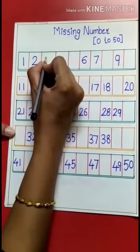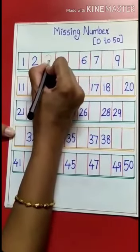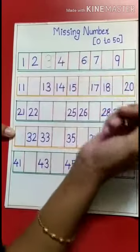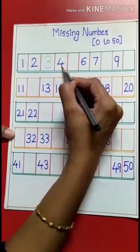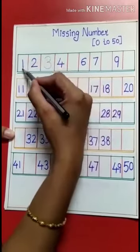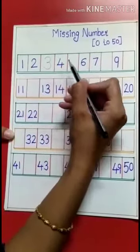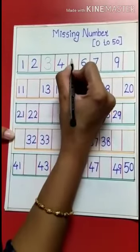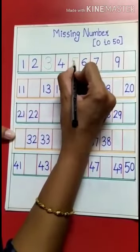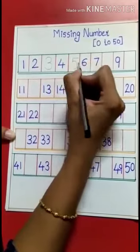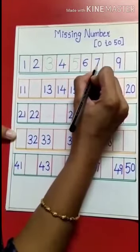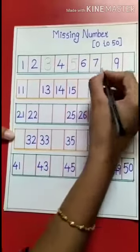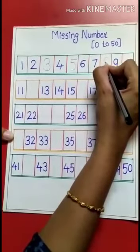Tell me children, what number comes after 2? Yes, it's 3, so what we will write here? 3. Then after 3, 4. After 4, 1, 2, 3, 4, yes it's 5.